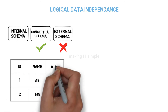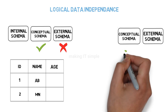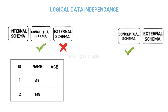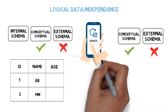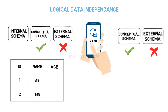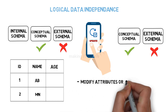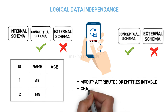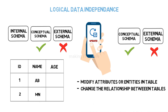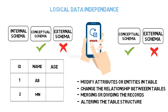If you add a new attribute to a table in the database, that is modifying the conceptual schema, but it will not affect the view or external schema — the application the end user is using will not get modified. Similarly, if you modify attributes or entities in a table, change the relationships between tables, merge two records, divide one record into two, or alter the table structure, you can make all these changes in the conceptual schema without modifying the external schema. This is logical data independence.